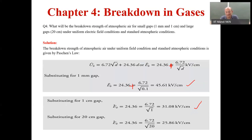You might have learned in many books that the breakdown strength of air is 31 kV per centimeter. Sometimes it is not clearly stated whether it is a peak value or what kind of voltage. As you have seen, when the gap distance is one millimeter it is 45.61 kV per centimeter, and only when the gap distance is one centimeter does it work out to be 31.08 kV per centimeter.